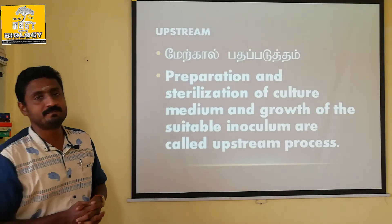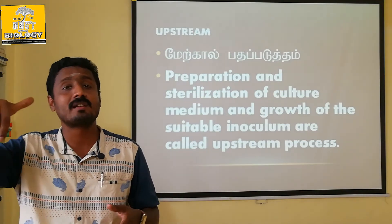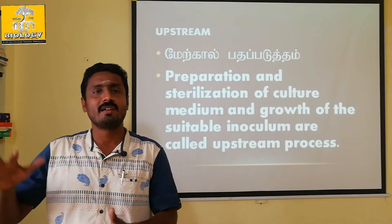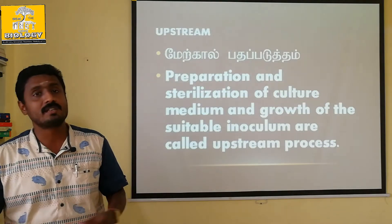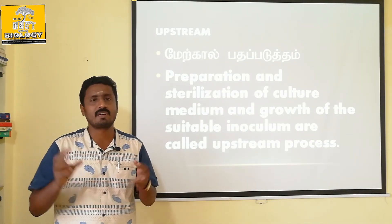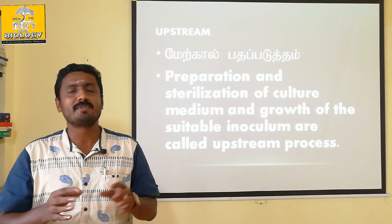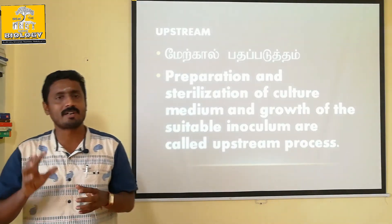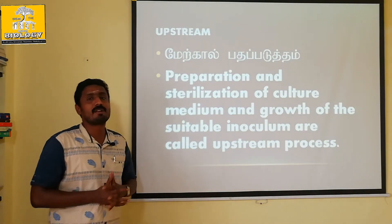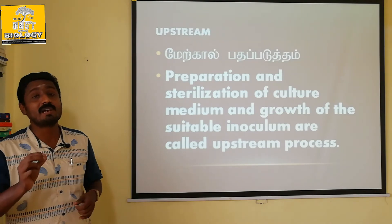Now let's do sterilization. What is sterilization? If you don't want any unwanted bacteria, you sterilize using an autoclave. The autoclave applies high temperature and high pressure — similar to a pressure cooker — to the medium. In microbiology, high temperature and high pressure are given to the medium with the help of an autoclave.